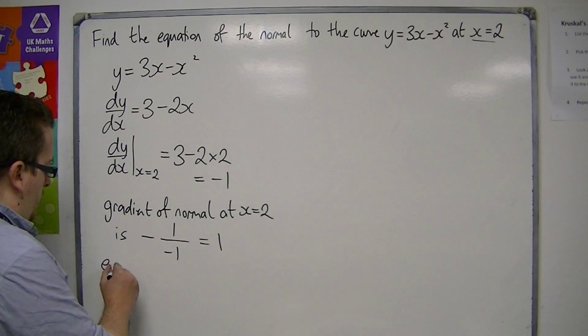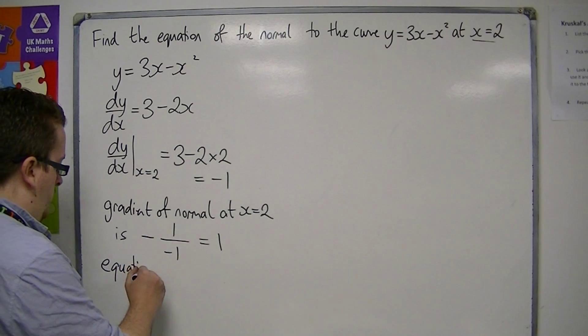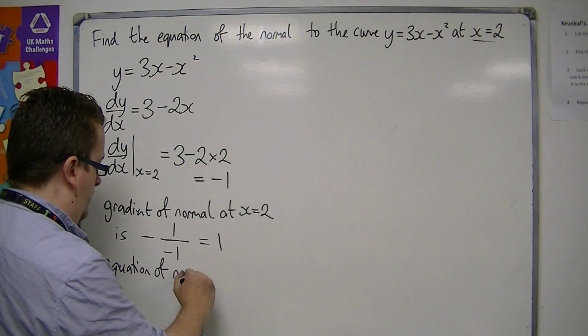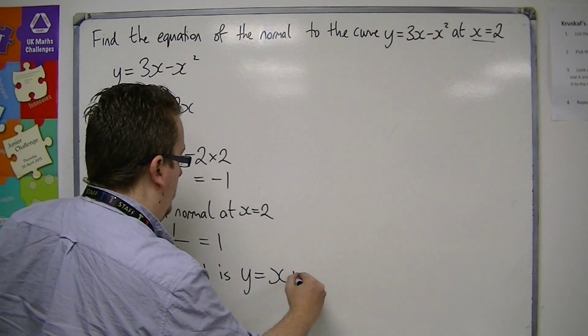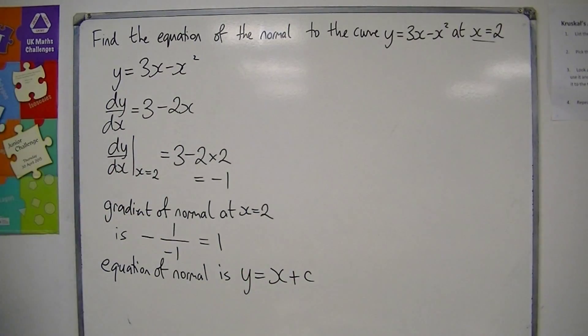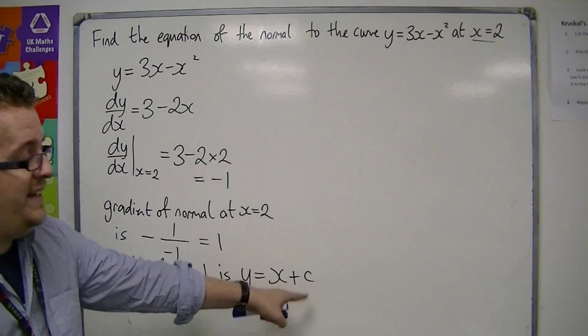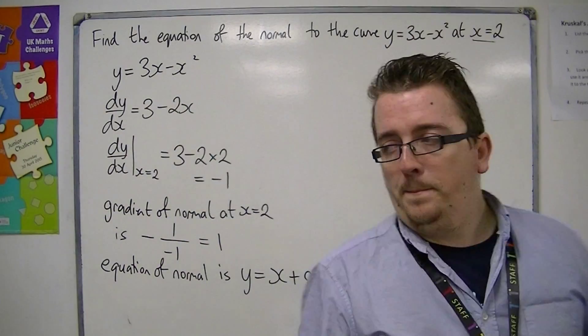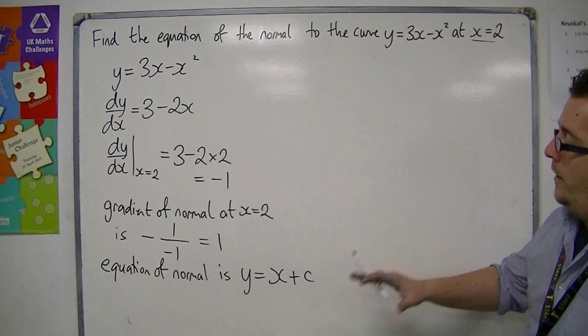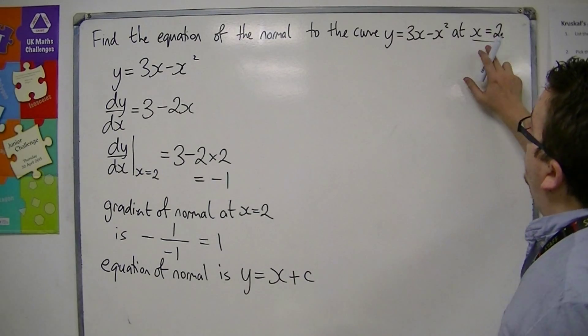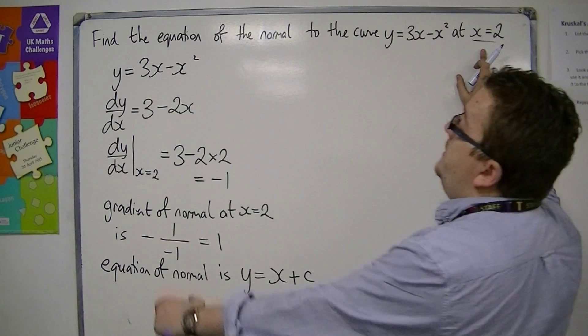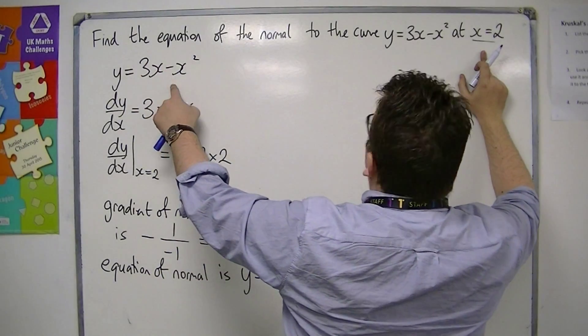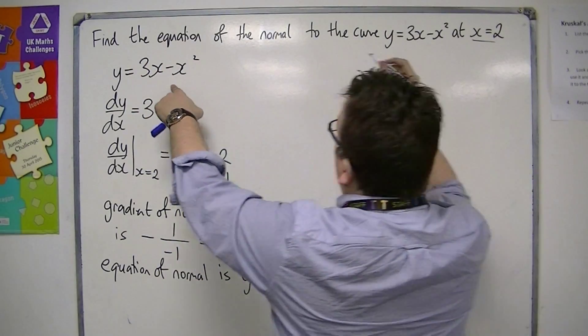So the equation of the normal is y equals x plus c. But I need to calculate that value of c. So I need the y-coordinate that corresponds with that x-coordinate. So I need to substitute x equals 2 into my original equation.